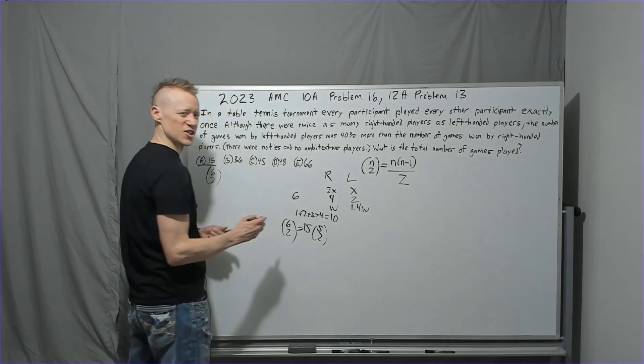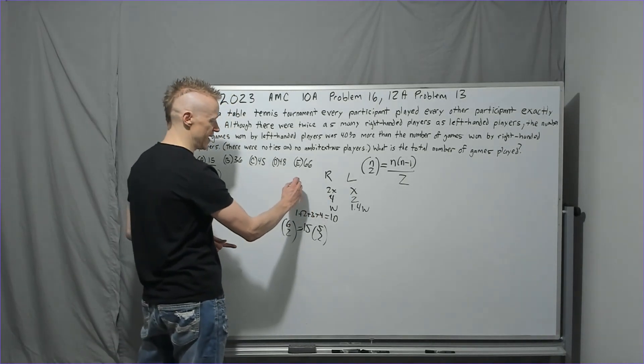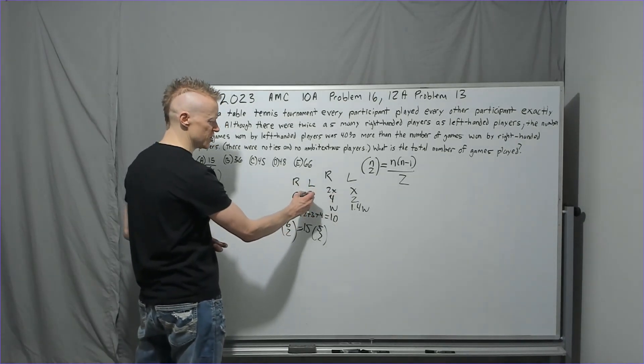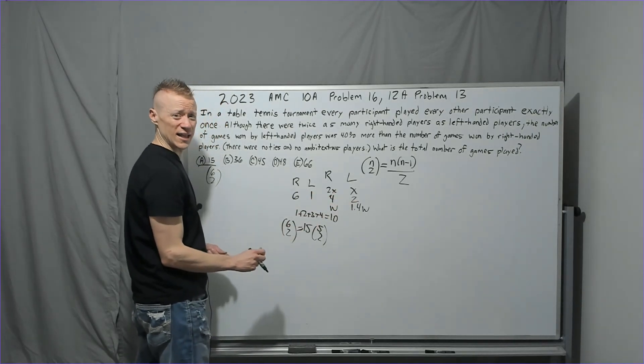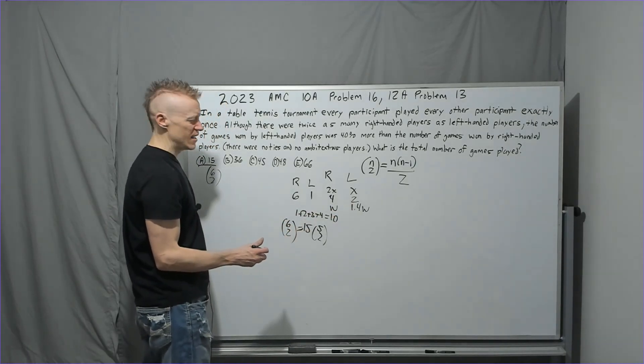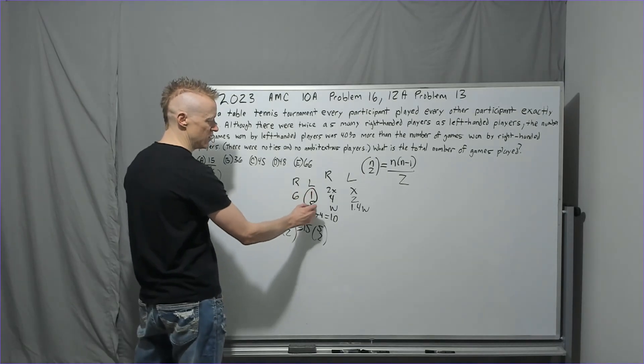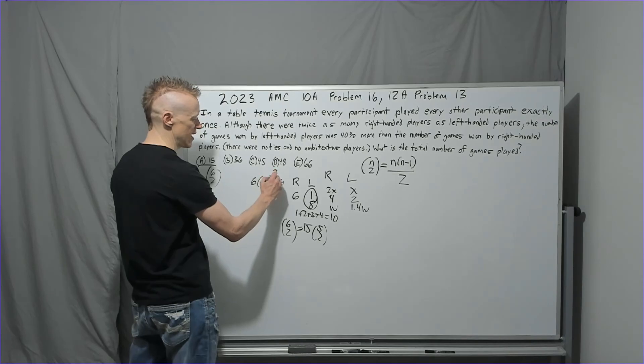Now what would happen is within the right-handed players, they would all have to play each other each time generating a win for each other. So if you had 6 games, you would have 4 choose 2 with 6 wins for right-handed players. Meanwhile, the left-handed players would do 2 choose 2, which is only 1. Now you're going to have all the right play all the left. And how many games would that be? 4 times 2, there would be 8 games. If they won all of the games, they would now have 9 wins. Is 6 times 1.4 equal to 9? The answer is no.